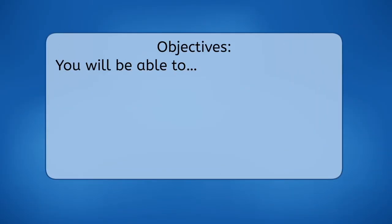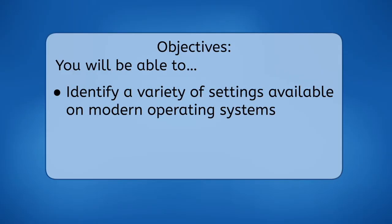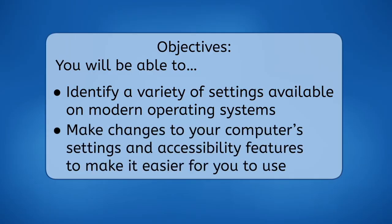In this lesson, you'll learn about many of these settings and accessibility features, which ensure that almost anybody is able to use computers in a way that is most comfortable for them. By the end of this lesson, you will be able to identify a variety of settings available on modern operating systems, and make changes to your computer's settings and accessibility features to make it easier for you to use. Let's get into it!